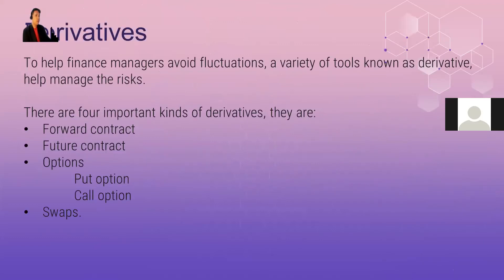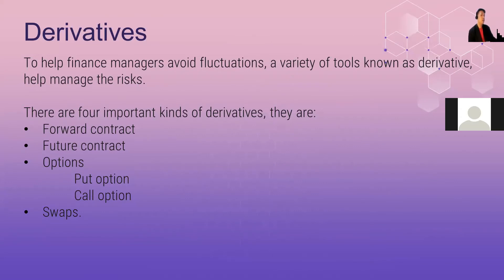The reason why we've talked about risk is that earlier I've talked about derivatives and how we use them as a tool to mitigate risk — specifically the risk of paying more. That's why we're entering into these derivative instruments. To help finance managers avoid fluctuations, a variety of tools known as derivatives help manage the risk.